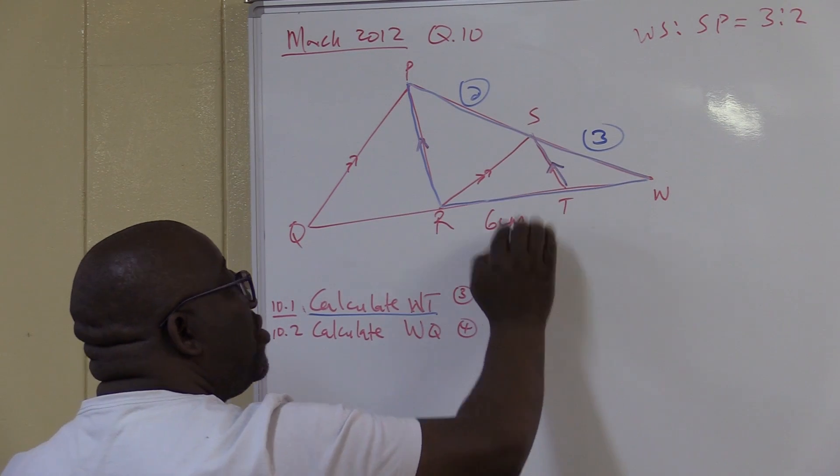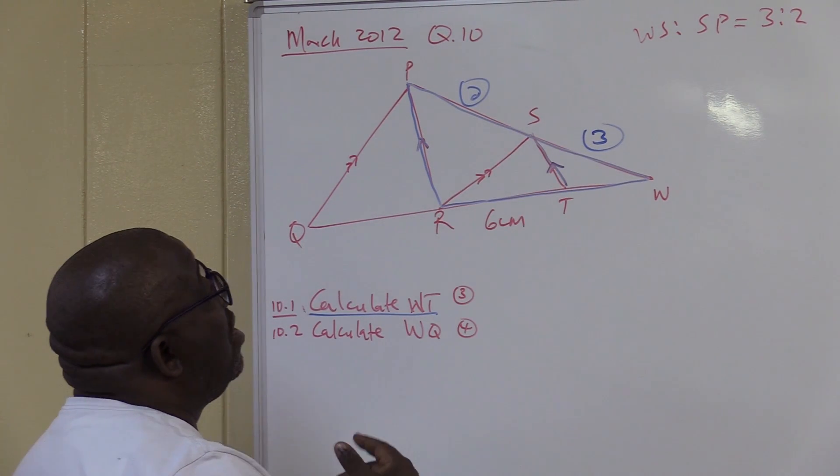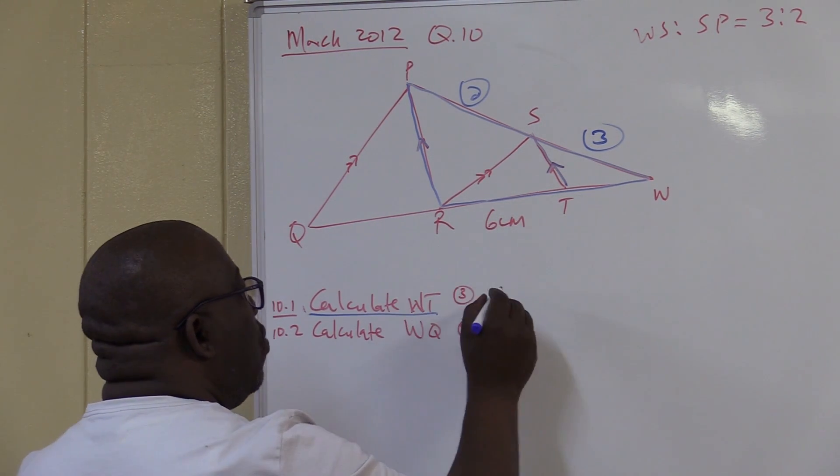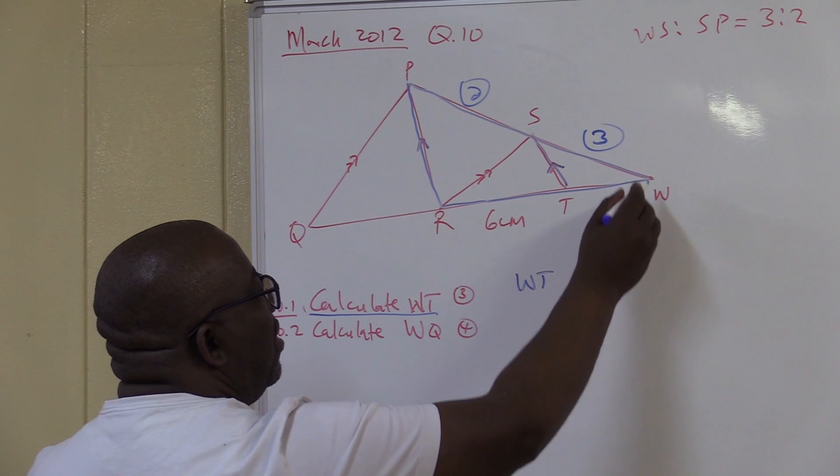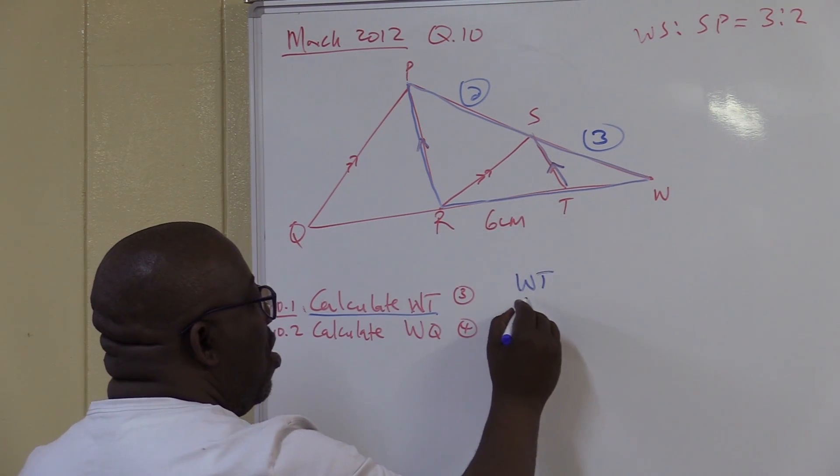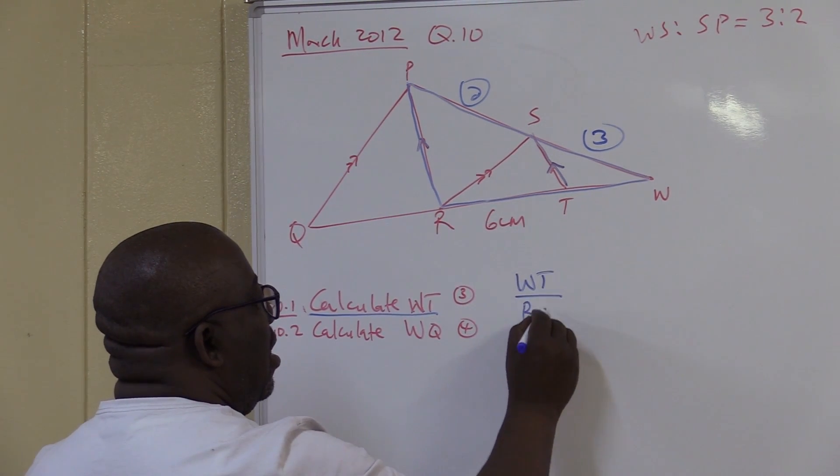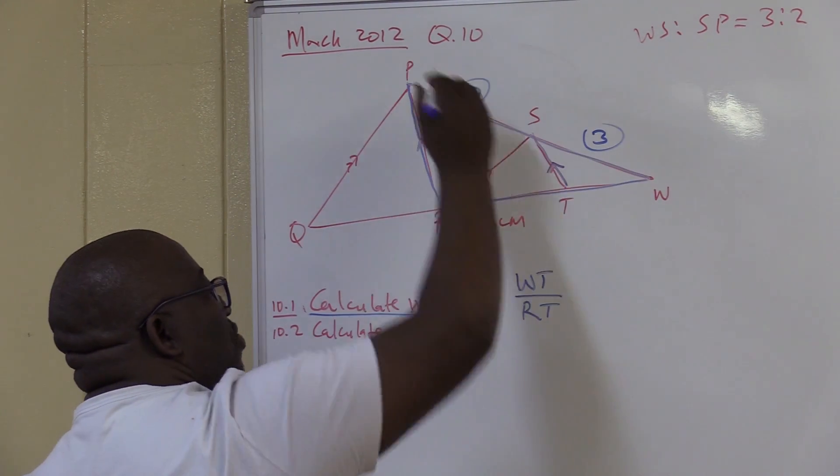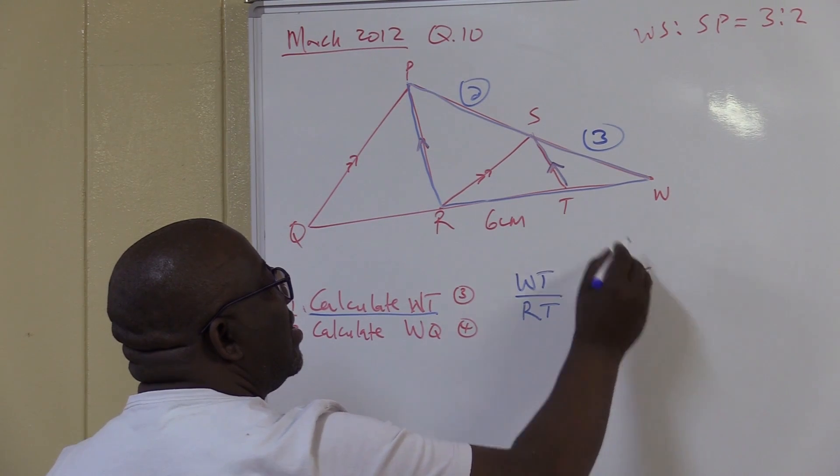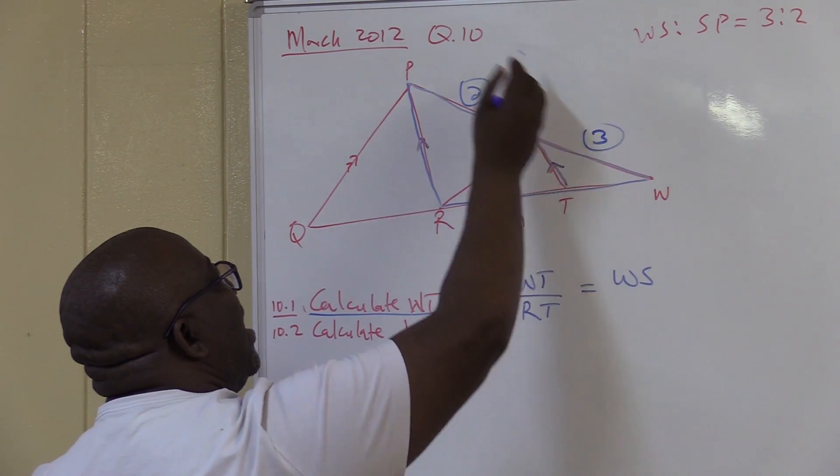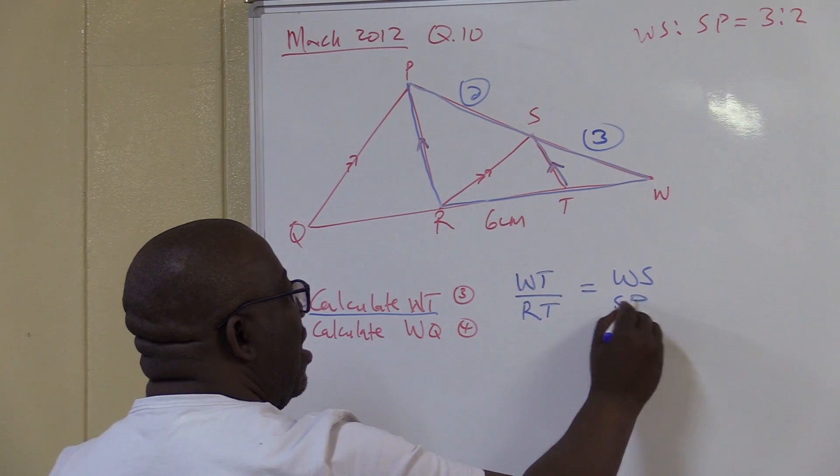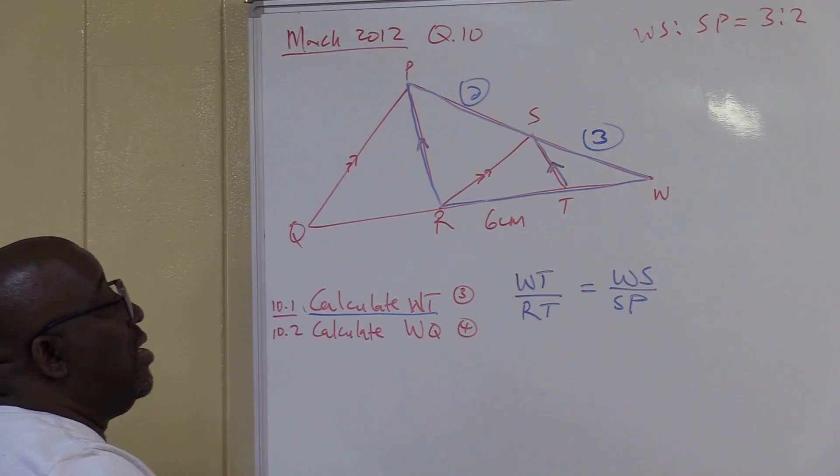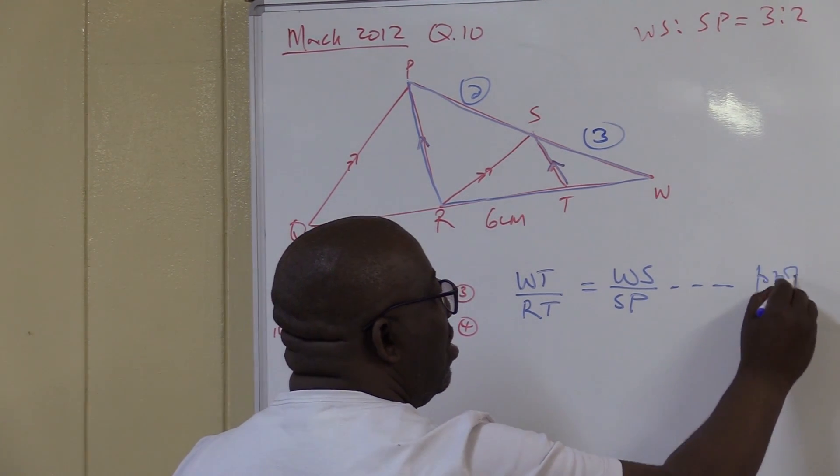Using in this triangle, I'm going to write in triangle P, R, W. Then I will say WT, what we're looking for. WT over RT. This over that is equal to that over that, which is WS over SP. What is it that I've applied here? I've applied the proportionality theorem.